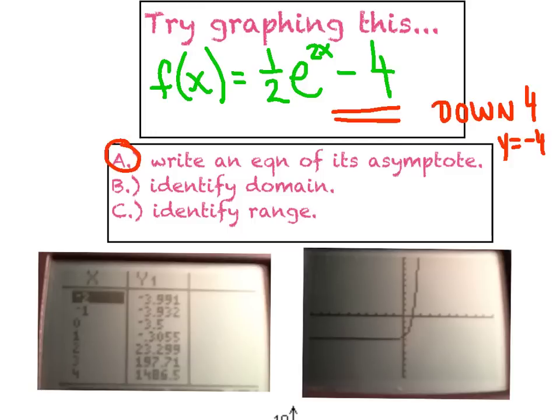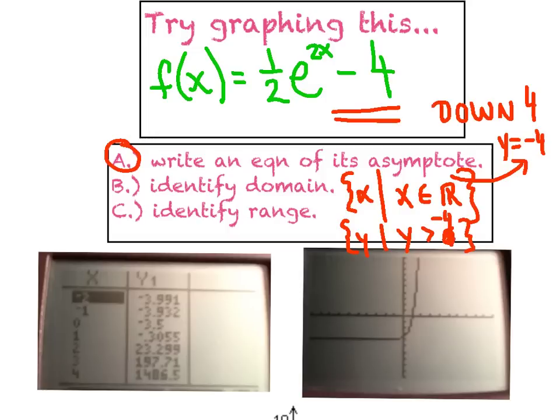When part A wants us to write the equation of the asymptote, we can do that right away and just instantly say y equals negative 4. We're going to also notice that the domain is unchanged. The domain is the set of all real numbers. We could say all values of x such that x is an element of the set of real numbers. As far as the range goes, we want to say all y values greater than negative 4 because that's where the new asymptote is, everything above that line. We're going to try graphing this function to verify these three answers.